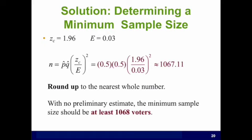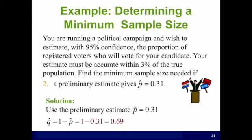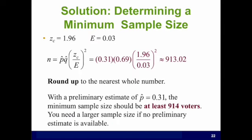We need at least this number of voters in order to have a margin of error 3%. Similar problem but now a preliminary estimate gives 31%. We use a preliminary estimate 31%. If P hat is 31% then Q hat is going to be 69% and then we use those values in the formula.